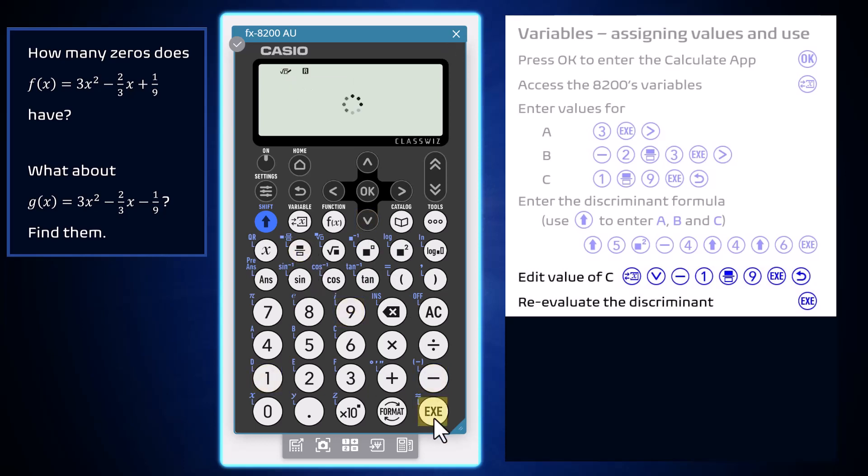Once this assignment has been executed, press Back. Now press Execute to recalculate the discriminant. This time, it is greater than 0, meaning that g of x has two distinct real zeros.